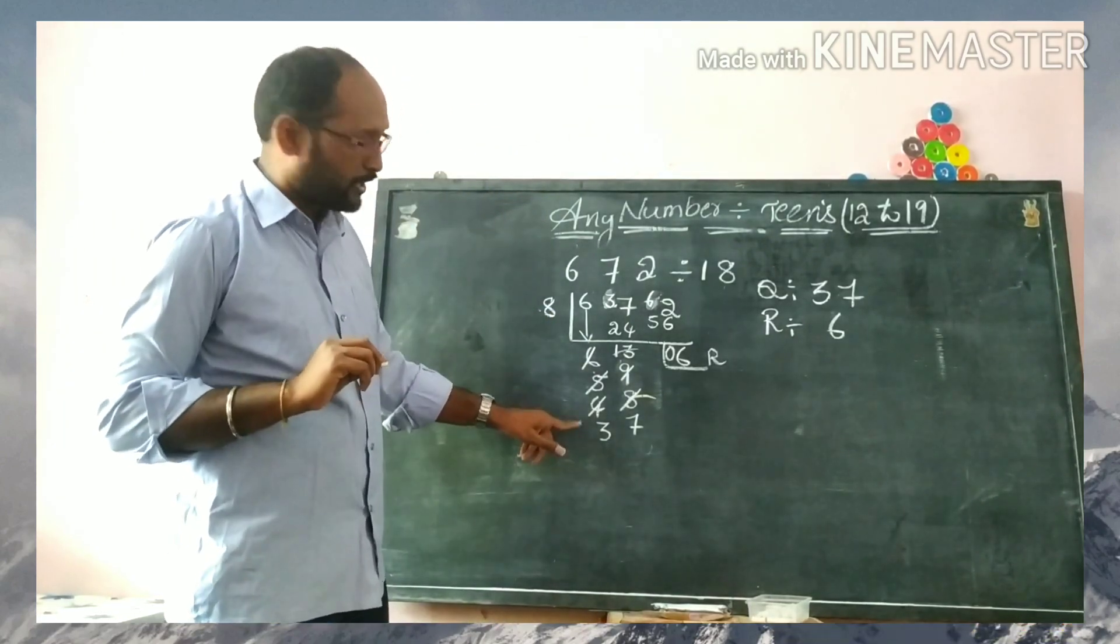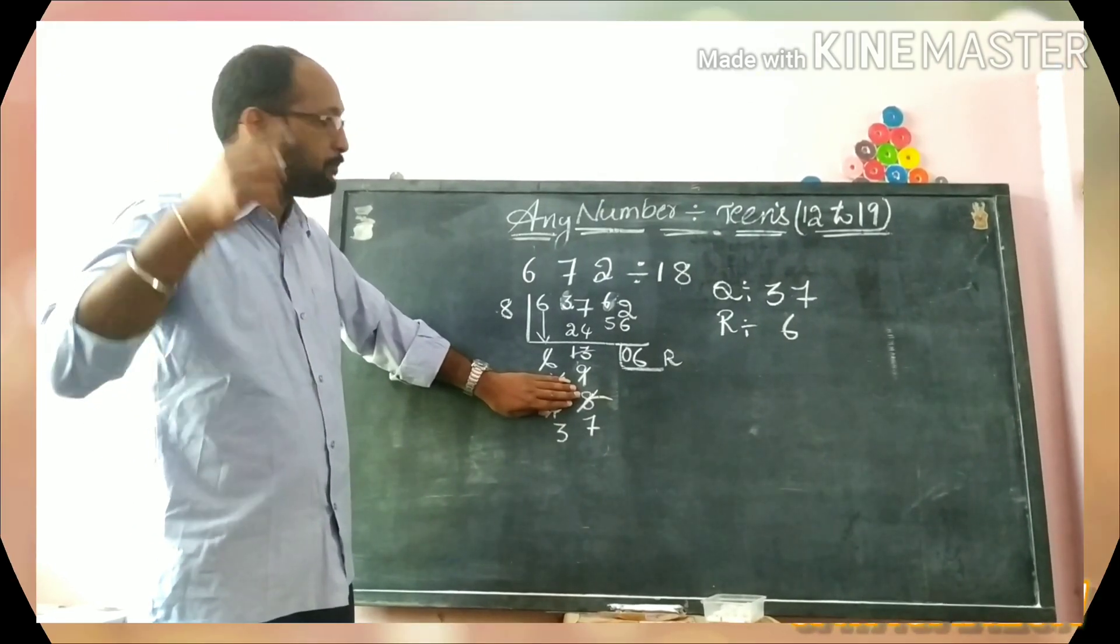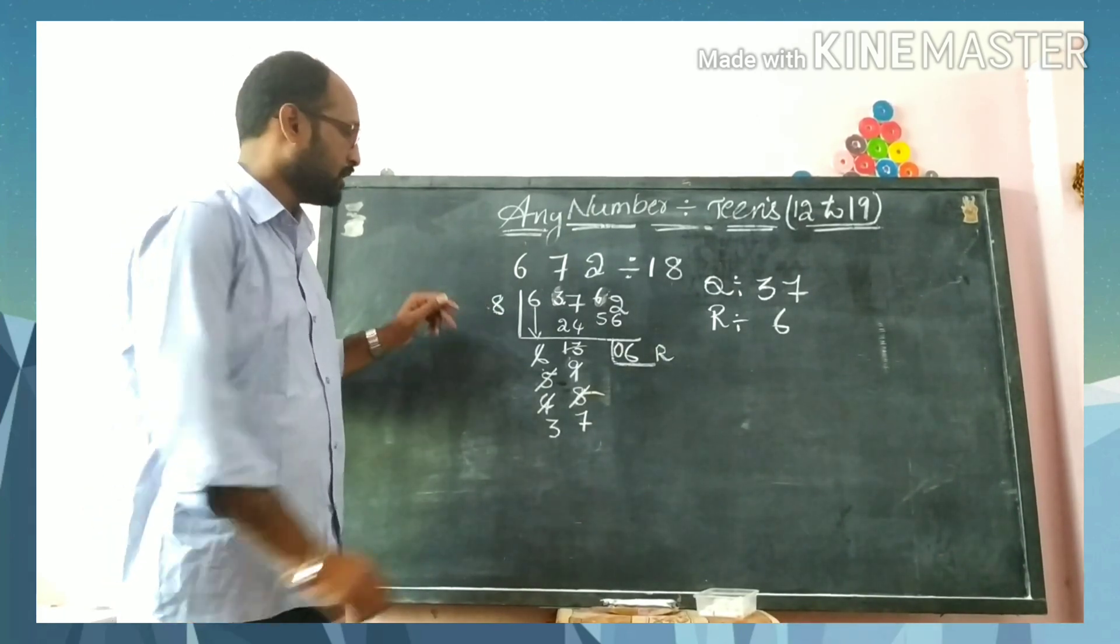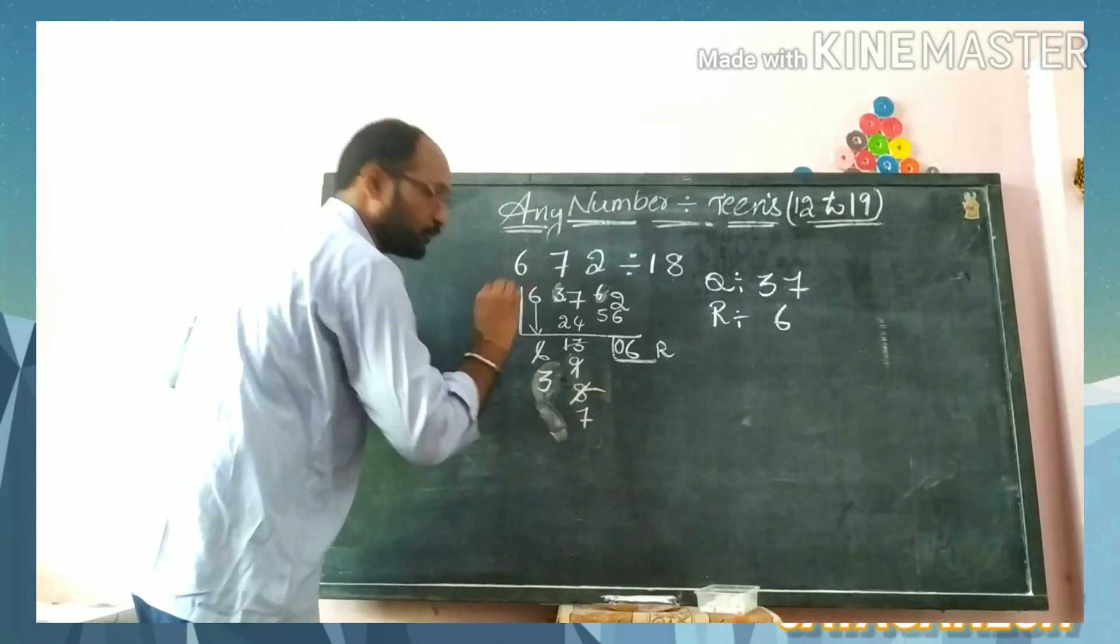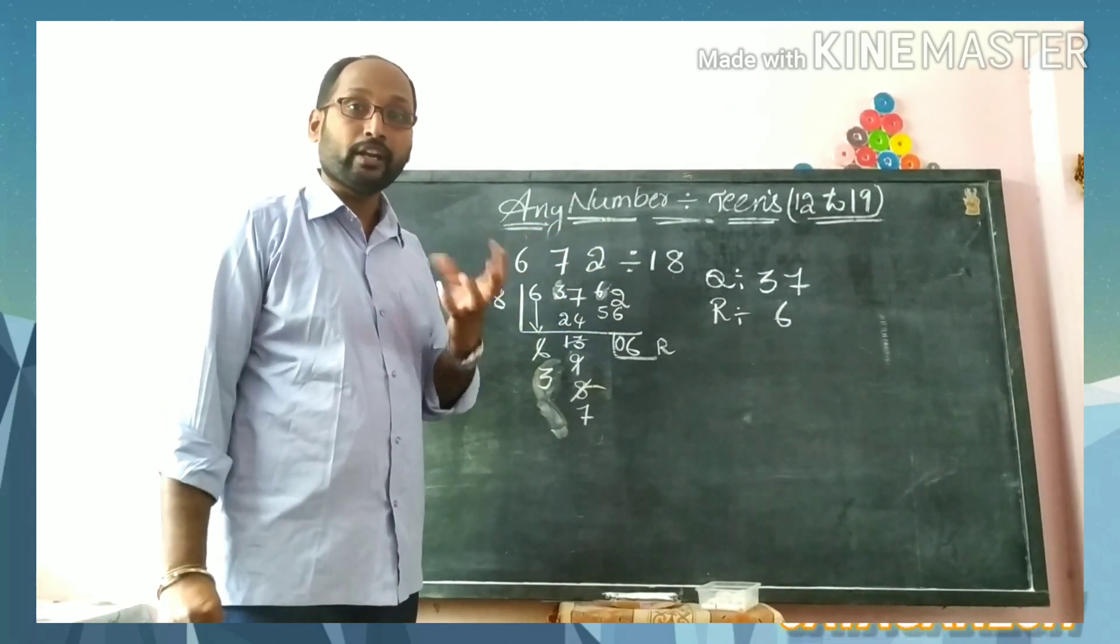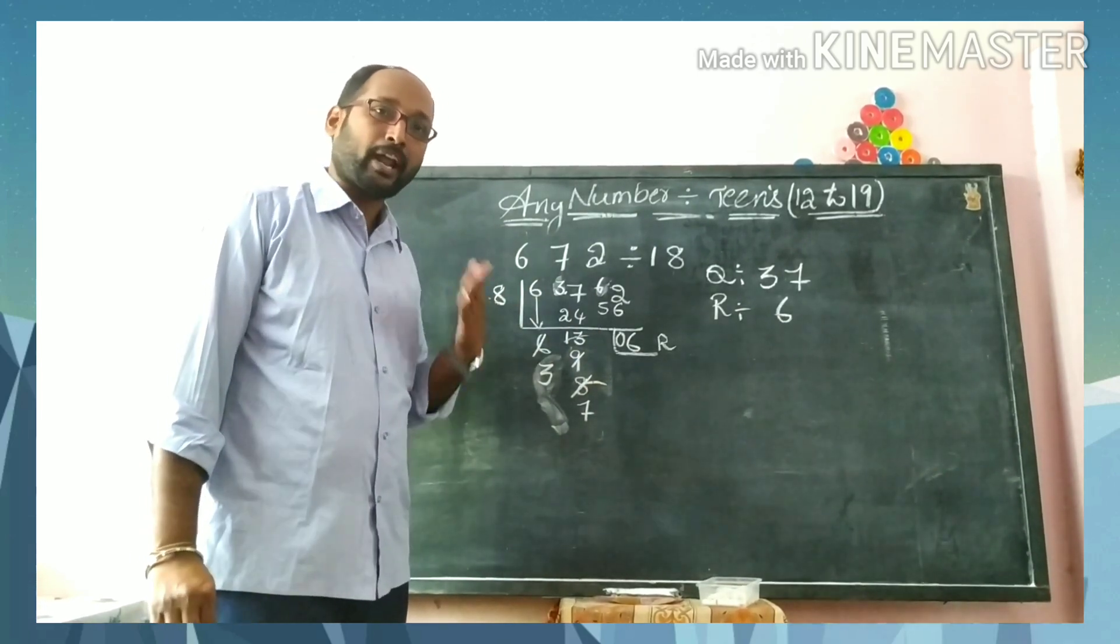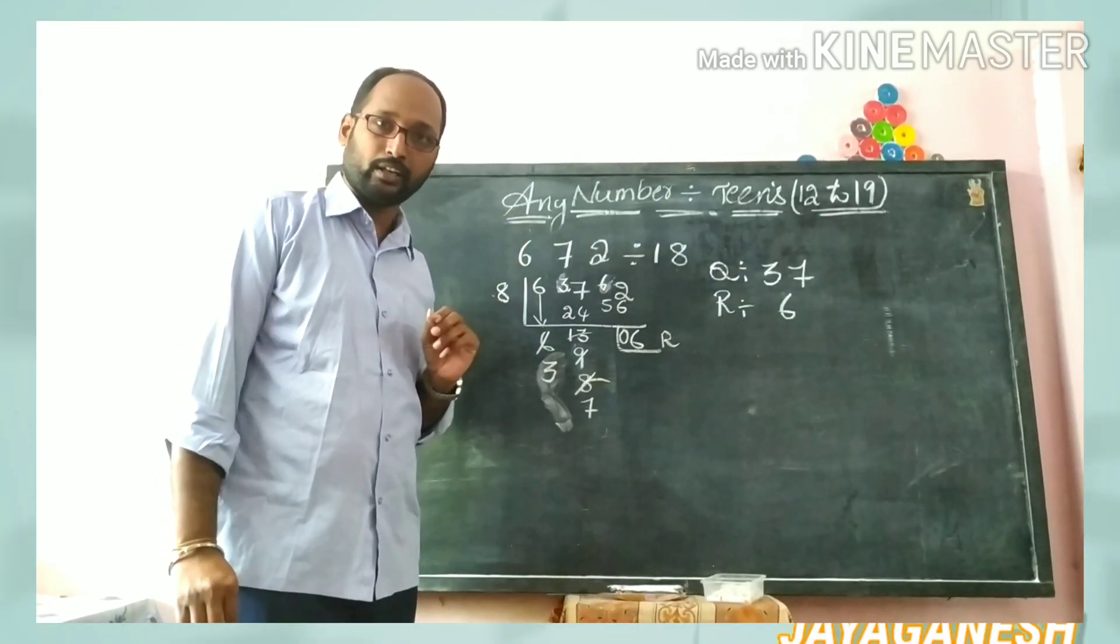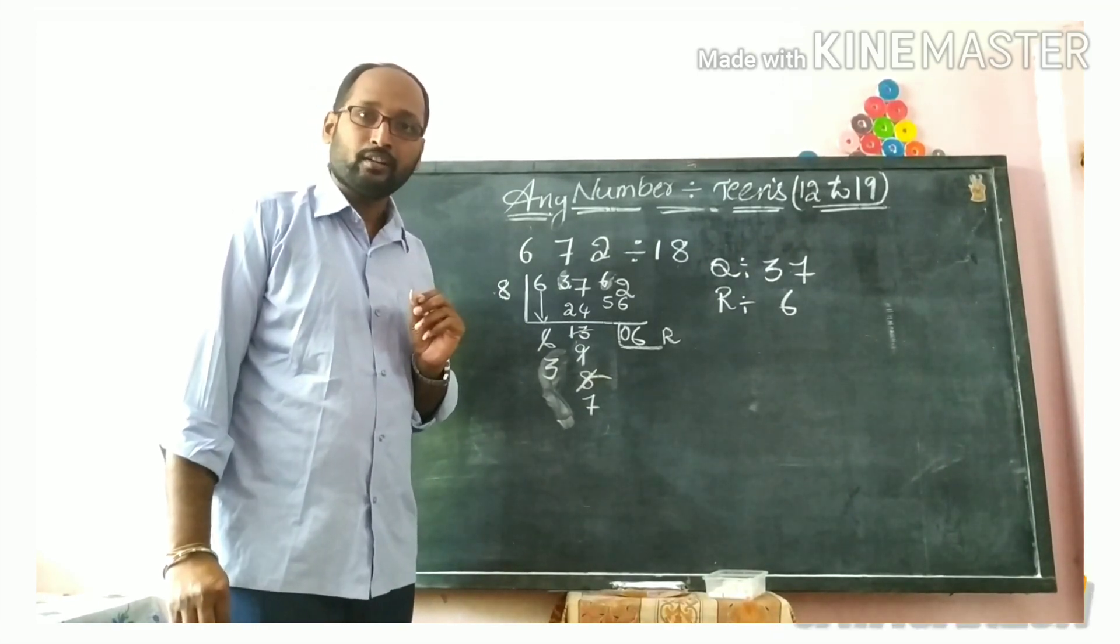Please understand this type of reducing. No need to always write 5, 4—just directly come to 3, then check in your brain if it's possible or not. Instead of writing 5 and 4, directly write 3. If you check like this, you will feel it is very easy. Otherwise you will feel very hard. Practice, practice, practice—practice makes man perfect. If you practice, you will get it. I think everyone has understood this topic very clearly. We'll go for the next topic in the next class. Thank you children, have a great day.